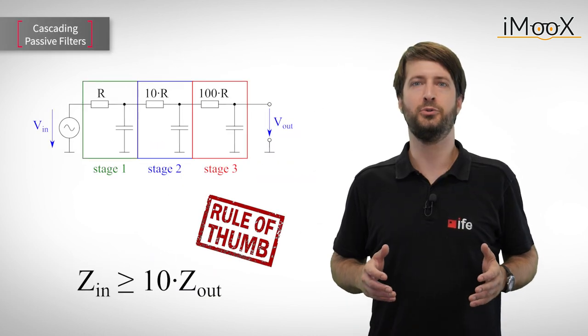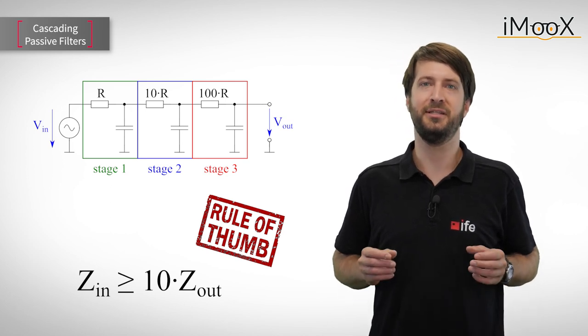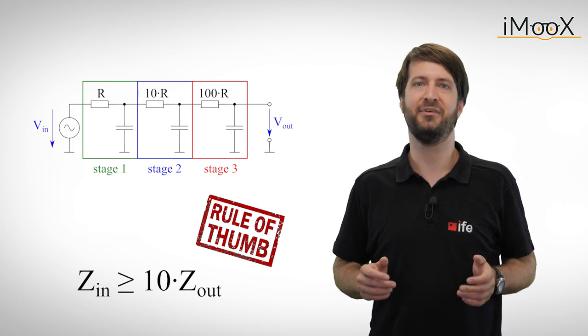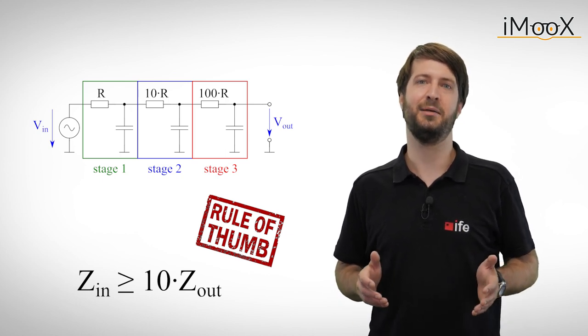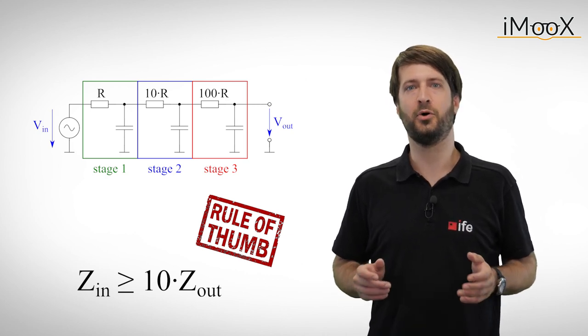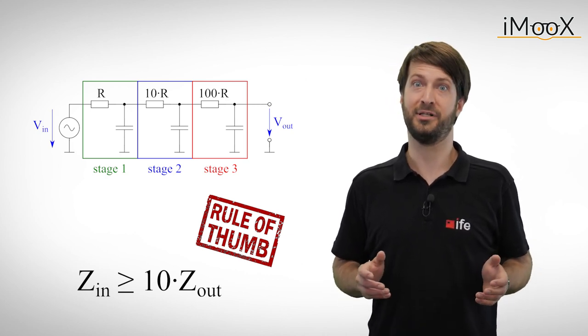So according to our rule of thumb, all we have to do to ensure the independence of each stage from the previous one is to make the value of R at least ten times higher for each stage we add. But not so fast. What about the corner frequencies of each individual stage?